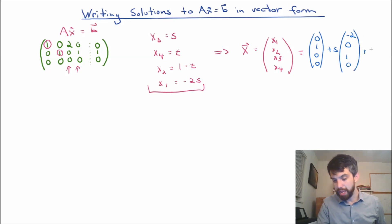And then finally, I'm going to put in a t. And then x1 has no t's, x2 has minus 1t, x3 has no t's, and x4 has 1t.